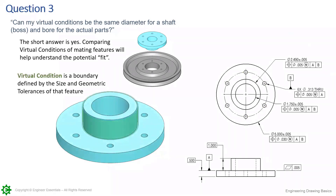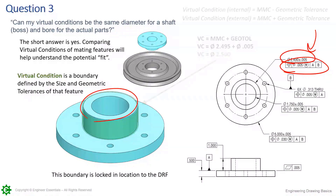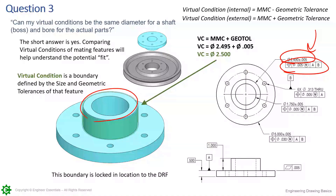For a quick refresher: virtual condition is a boundary that's defined by the size of the feature and the geometric tolerances of that feature. When these two are combined, they create this virtual condition — this boundary or envelope. No element of this boss will ever deviate outside of this green envelope. If it does, it's a failing part and should be rejected. This is the theoretical boundary we can calculate using virtual condition equations.